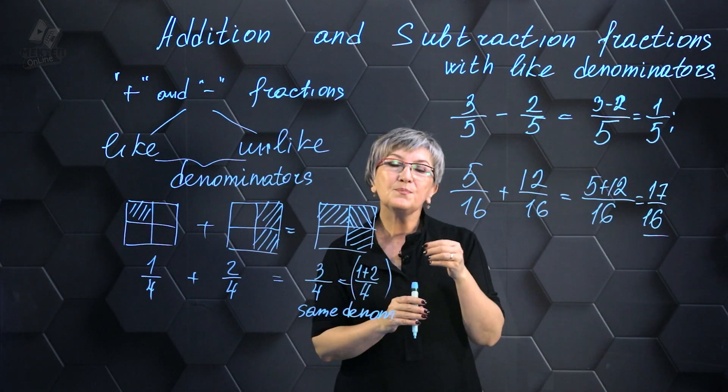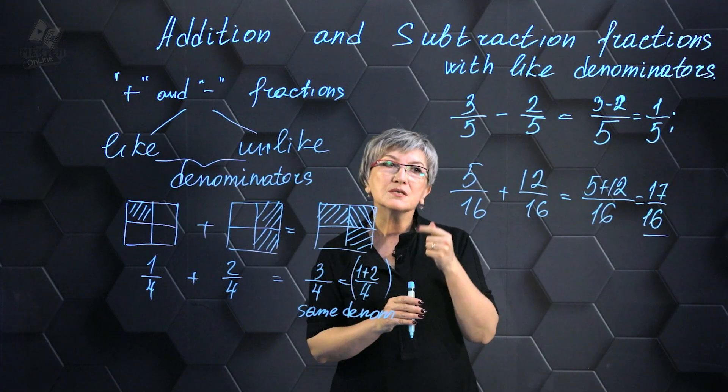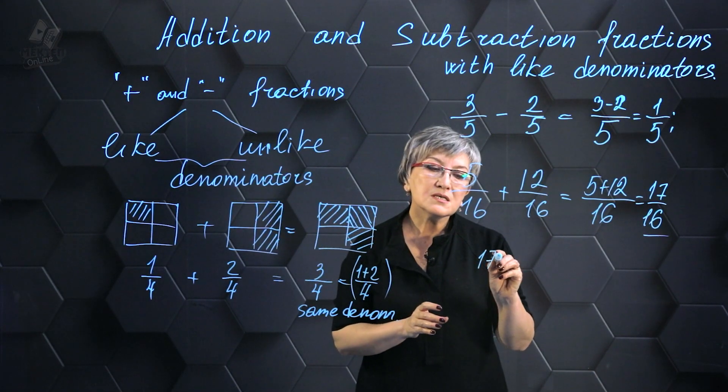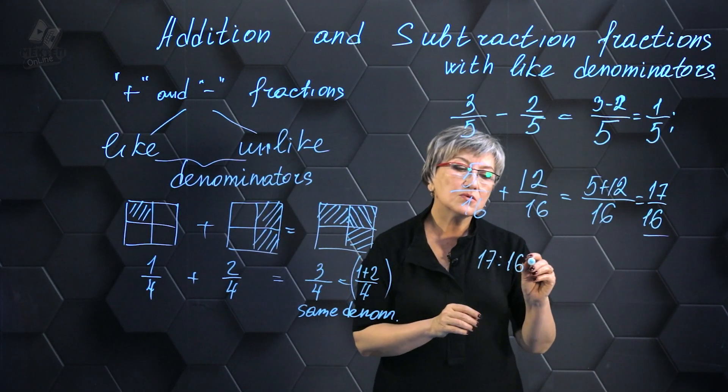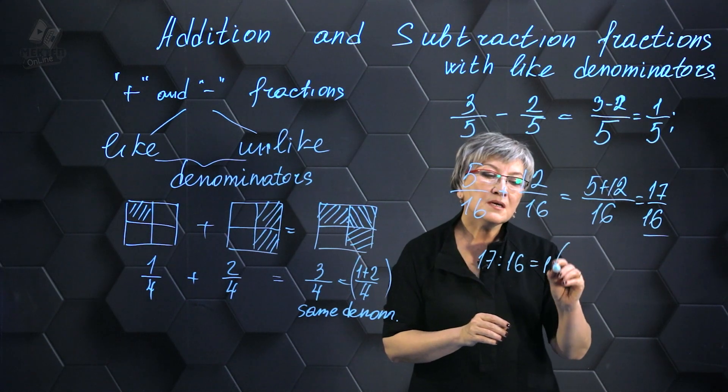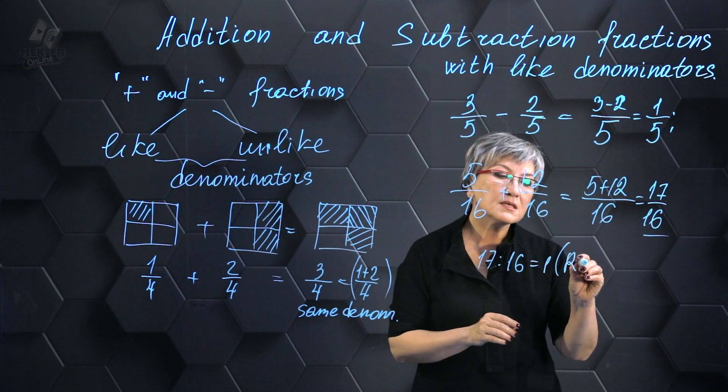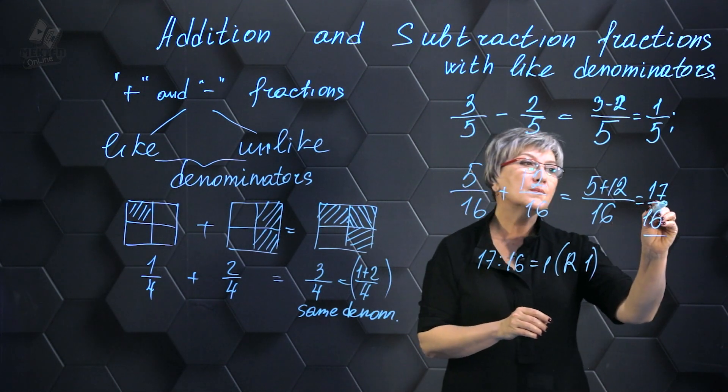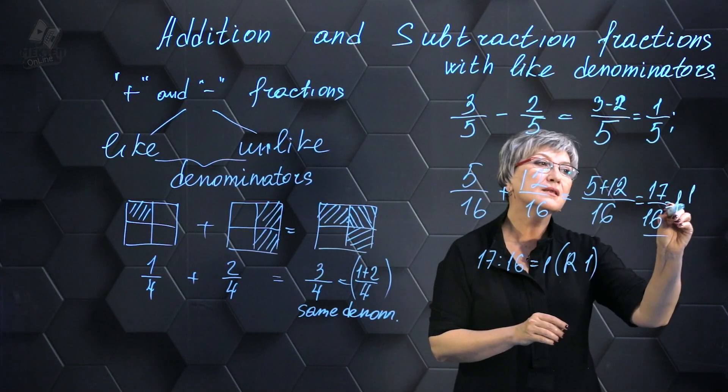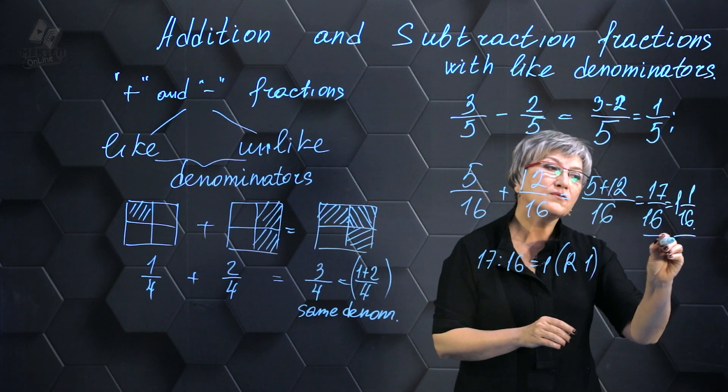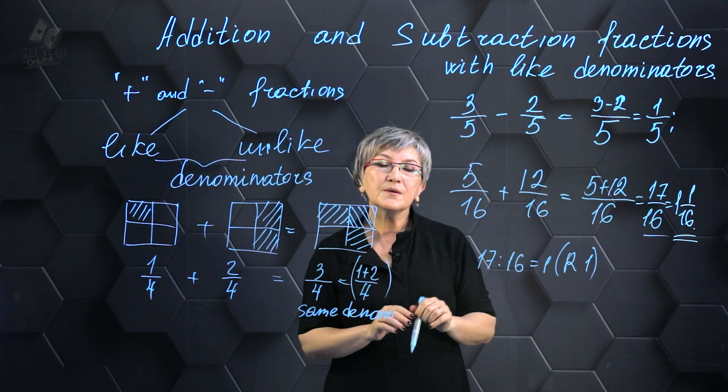But in math, it's customary to separate the whole part. Recall how we separate the whole part. When dividing 17 by 16, I get one. There's just a little bit left. So, I can write one and one-sixteenth.